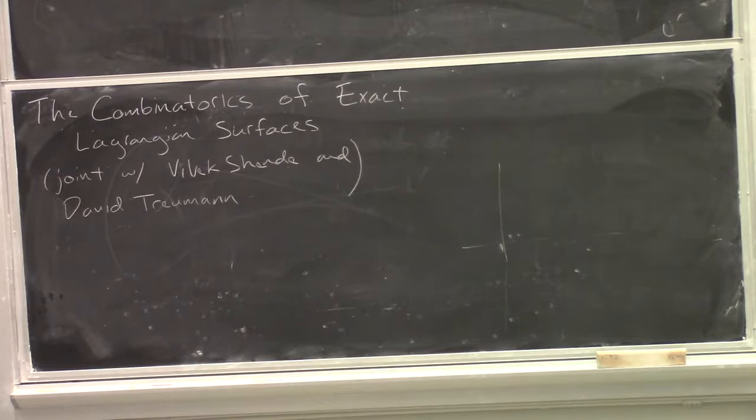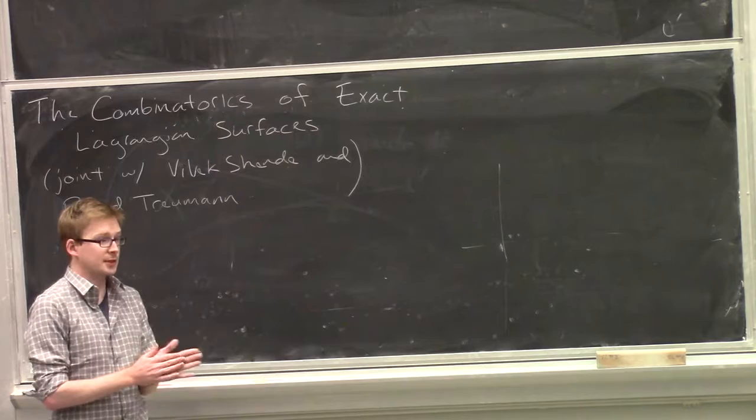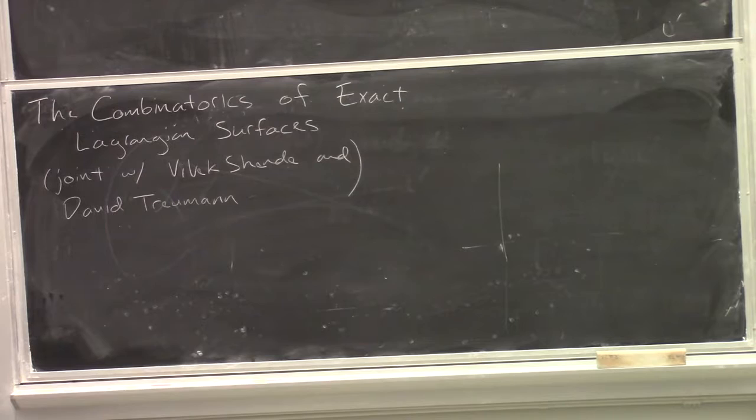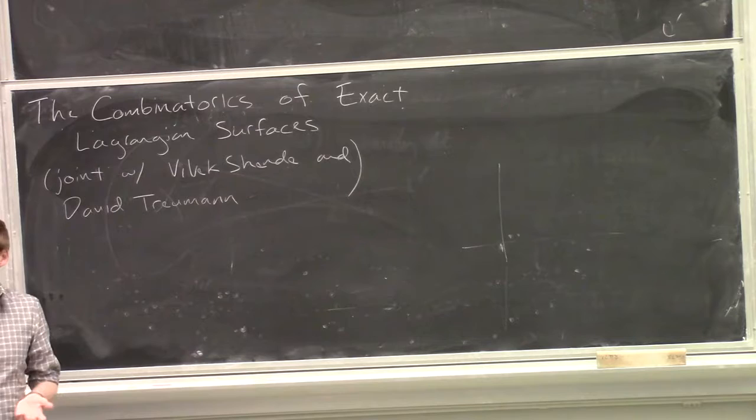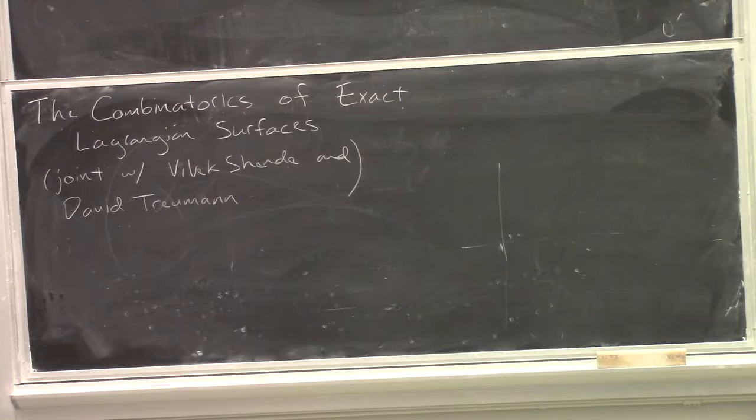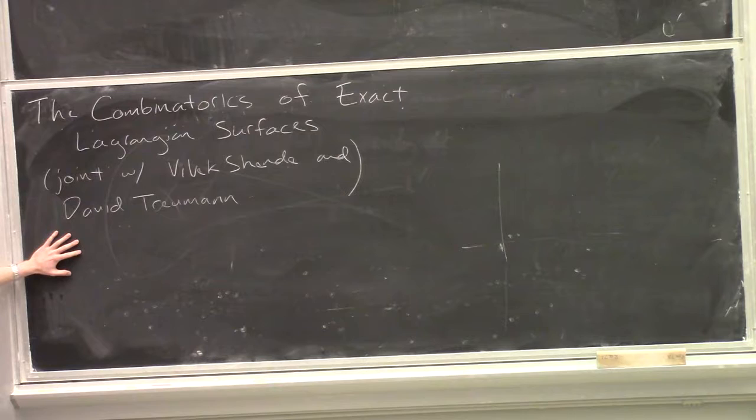There are various reasons you might be interested in microlocal sheaves. One is that there are important objects in geometric representation theory - spaces of local systems on punctured surfaces, or more generally local systems with Stokes data - that you can describe as moduli spaces of microlocal sheaves. David brought up yesterday this developing dictionary between microlocal sheaves and A-branes in the usual Fukaya-theoretic sense. The thesis is that one feature is that the object is a cluster variety.